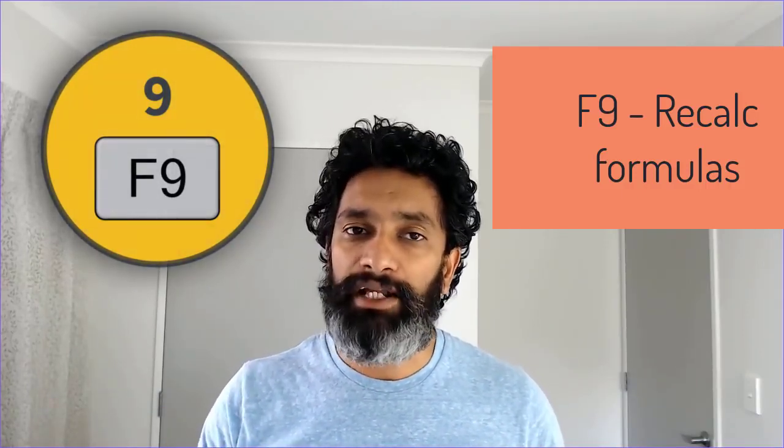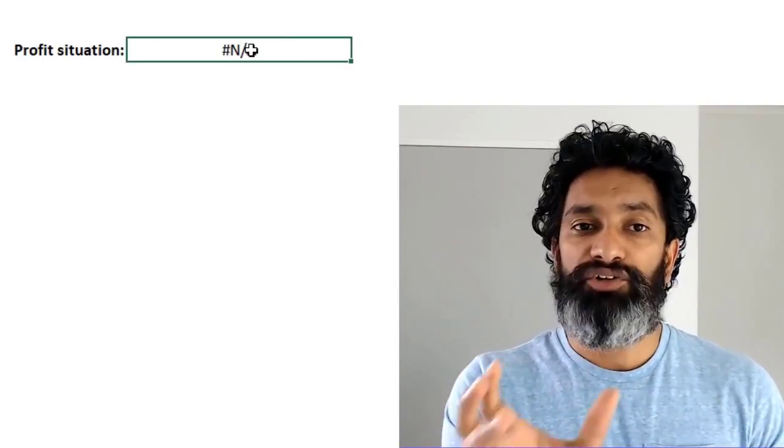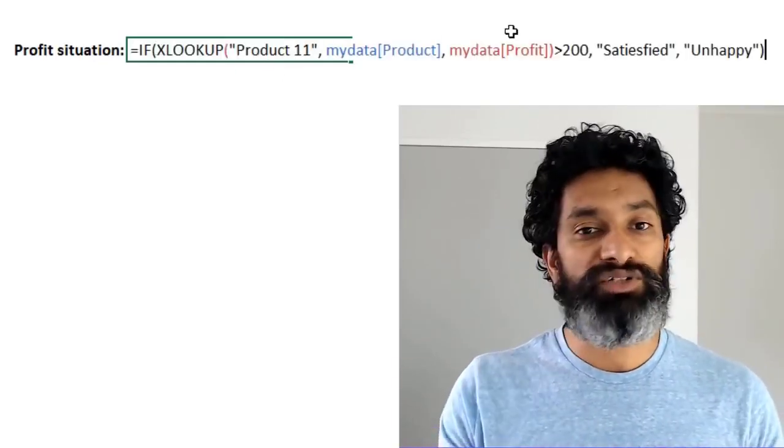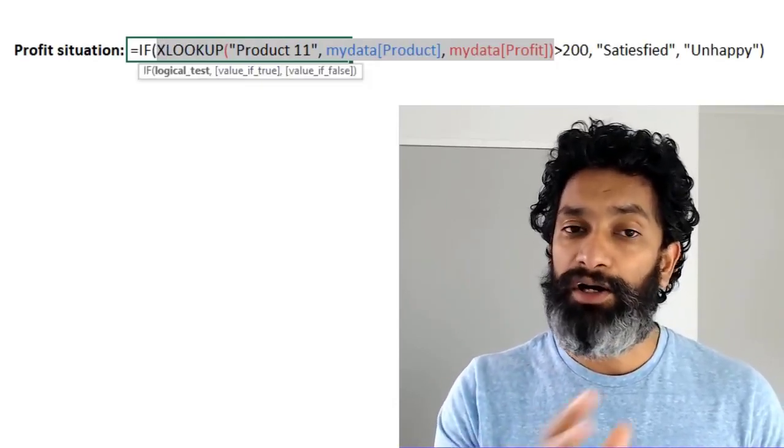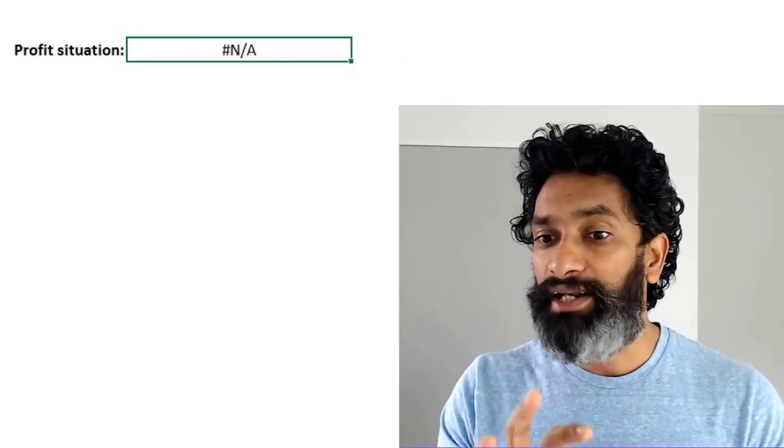The third function key shortcut is F9. Normally F9 recalculates your formulas — you usually don't need it since Excel calculations are set to automatic, but you can use it to force recalculation. F9 also has a special purpose when building complex worksheets: if you have a big formula giving an error and you don't know where it's coming from, you can use F9 to debug it. Open the formula, select a portion of it, press F9, and it will evaluate just that portion — letting you narrow down where the problem is.